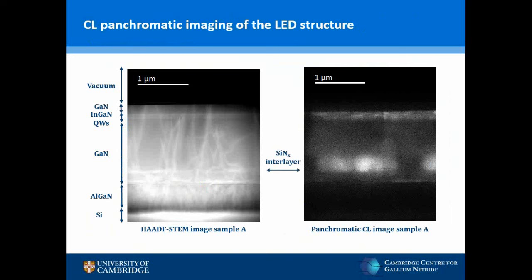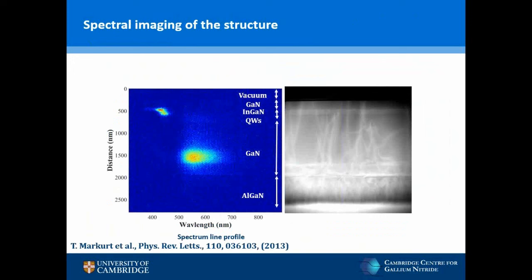Nanocathodoluminescence imaging of the overall LED structure in cross-section shows the variation in luminescence within the structure. Bright luminescence is observed at the top of the structure, directly correlated with the quantum wells observed in the STEM image. We also observe substantial CL intensity arising from above the silicon nitride interlayer. A spectral line profile along the length of the sample reveals that the luminescence from the silicon nitride interlayer is in the region of 550 nanometers — commonly referred to as yellow band luminescence — arising from increased unintentional incorporation of oxygen due to three-dimensional growth.